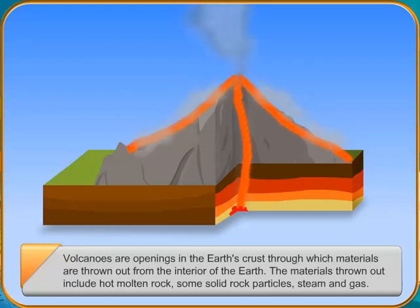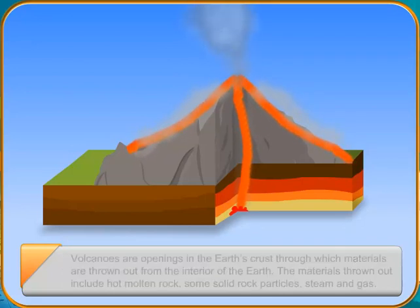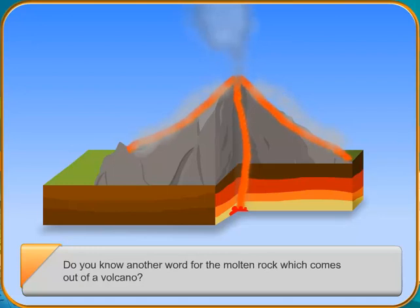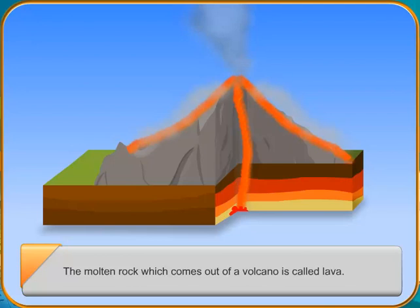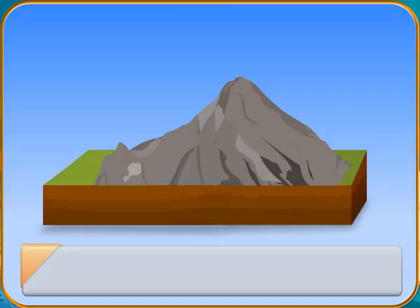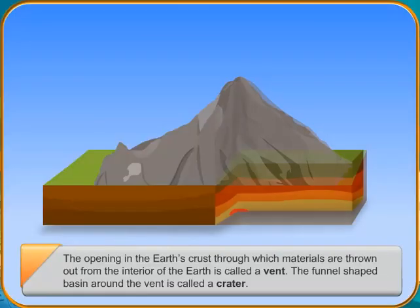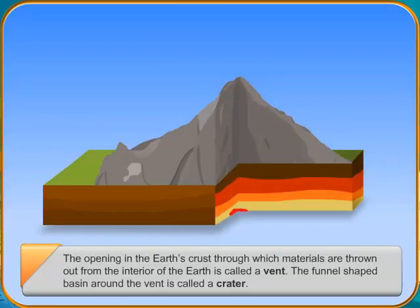Do you know another word for the molten rock which comes out of a volcano? The molten rock which comes out of a volcano is called lava. The opening in the Earth's crust through which materials are thrown out from the interior of the Earth is called a vent.